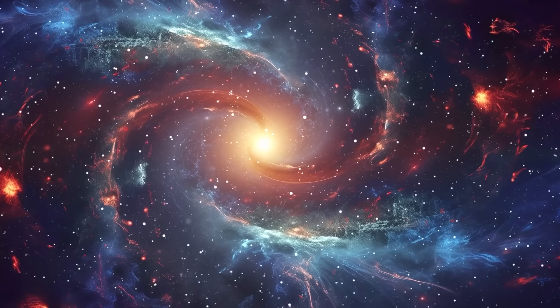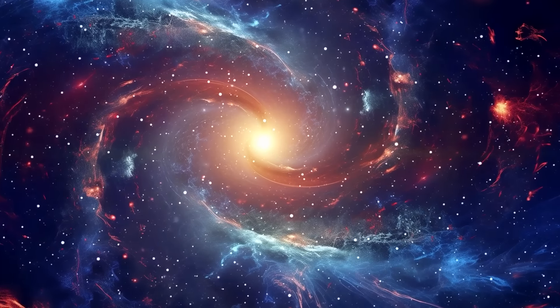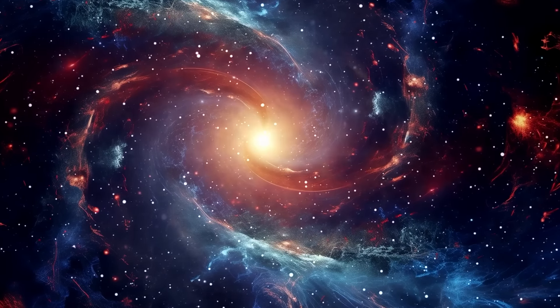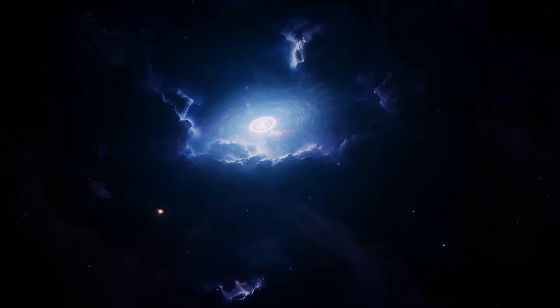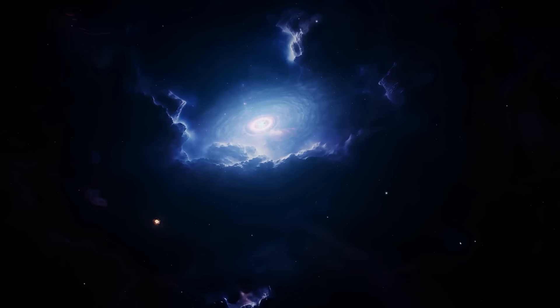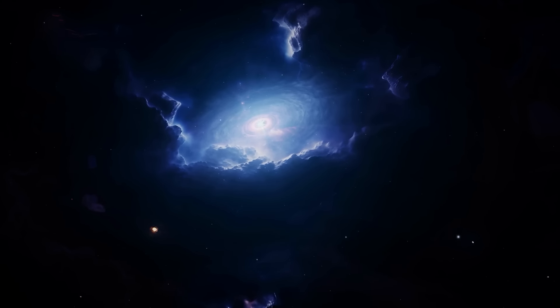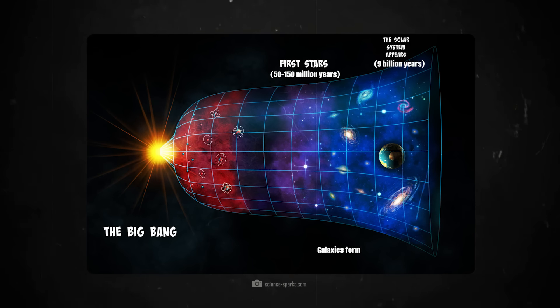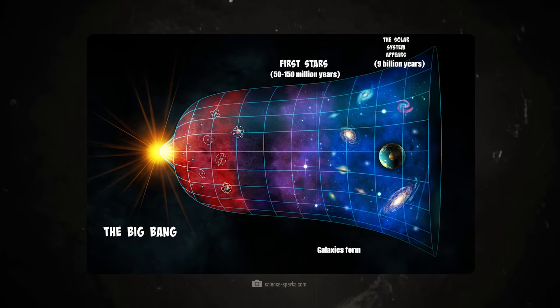According to James Webb's measurement data, Glass Z13 is a highly developed, ready-made galaxy. This galaxy has taken at least one to five billion years to reach the size and luminosity that we see today. But that cannot be the case, because that would mean that this galaxy already existed before the Big Bang.